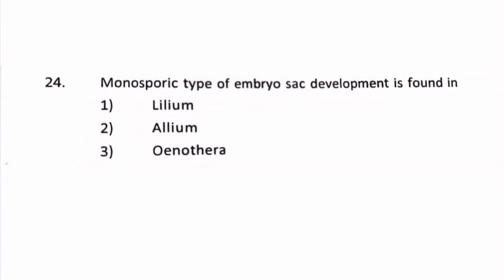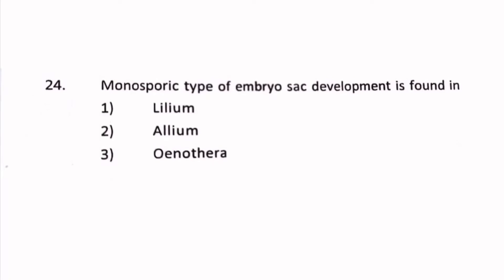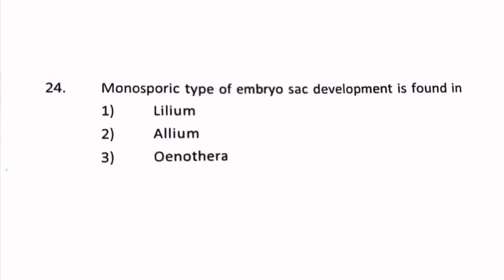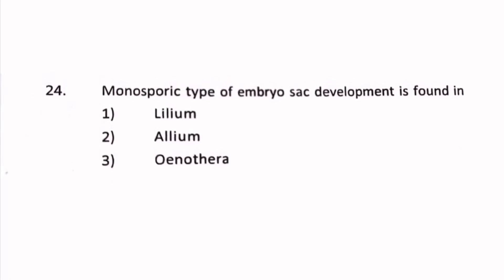Monosporic type of embryo sac development is found in: 1. Lilium, 2. Lilium, 3. Oenothera, 4. Fritillaria.